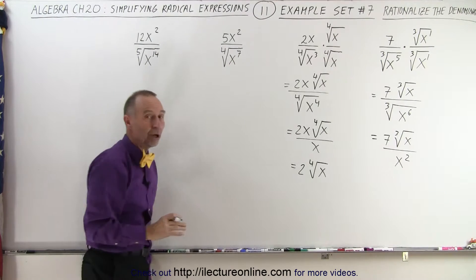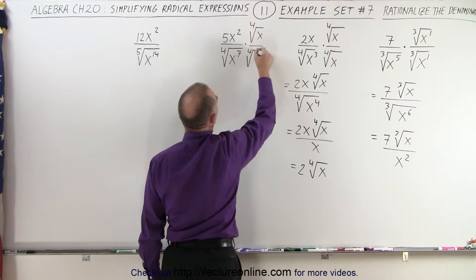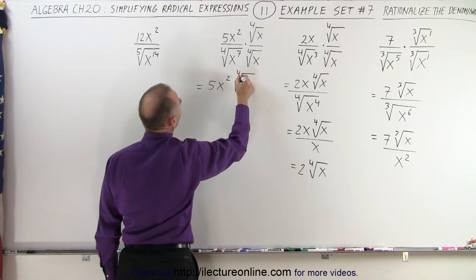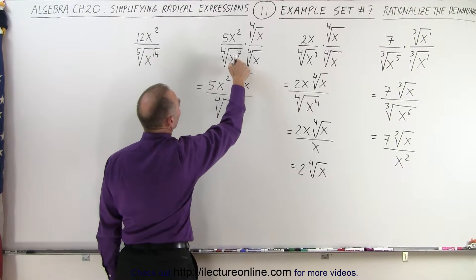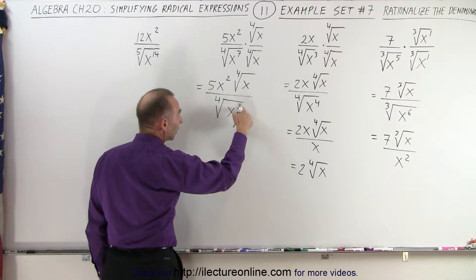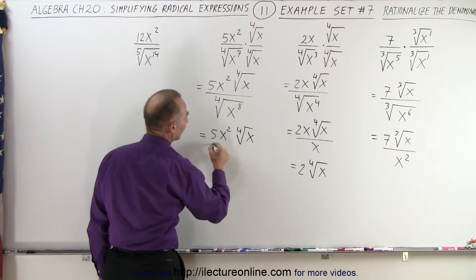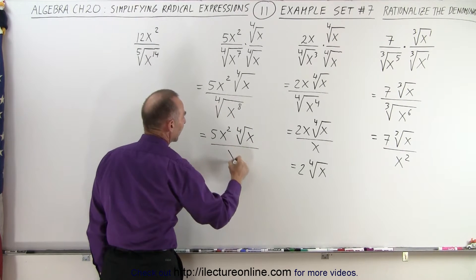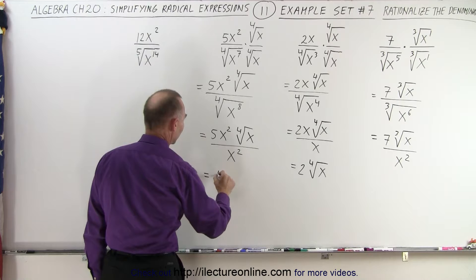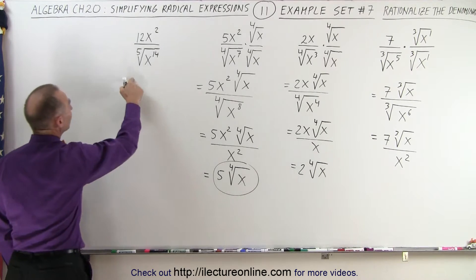Here we do the same thing — we want this to be a multiple of 4, so we multiply both the top and the bottom by the fourth root of x to the first power. In the numerator we get 5x squared times the fourth root of x, and in the denominator we get the fourth root of x to the 7 times x to the first, which is x to the 8. We take the power and divide by the root, so this can be written as 5x squared times the fourth root of x divided by x squared (since 8 divided by 4 is 2). Now the x squared cancels out, so this is 5 times the fourth root of x as the simplified form.